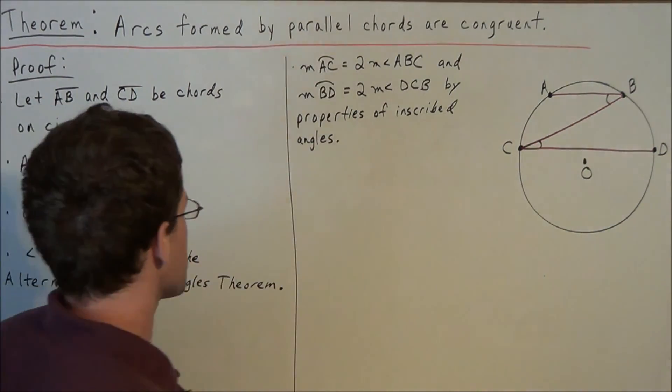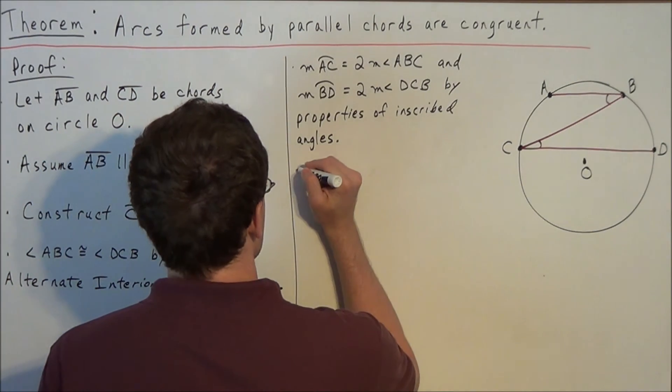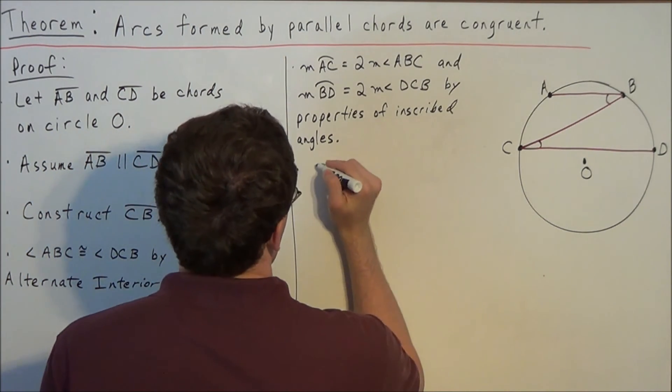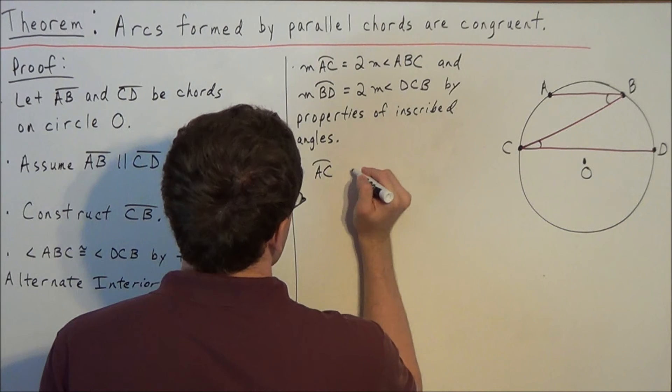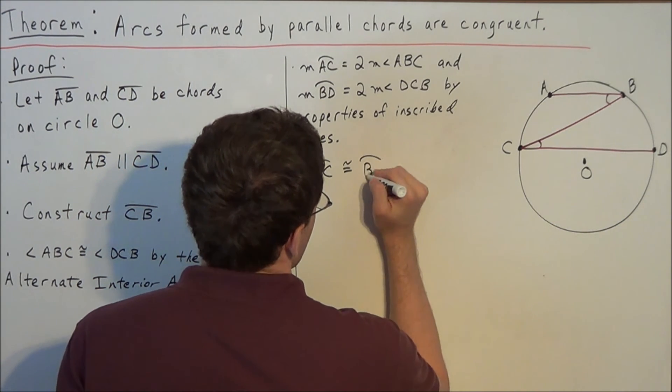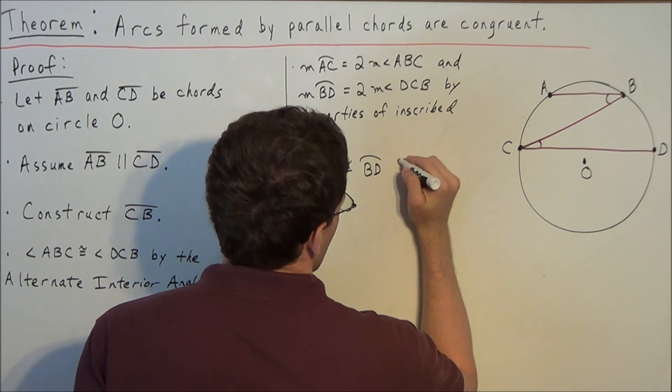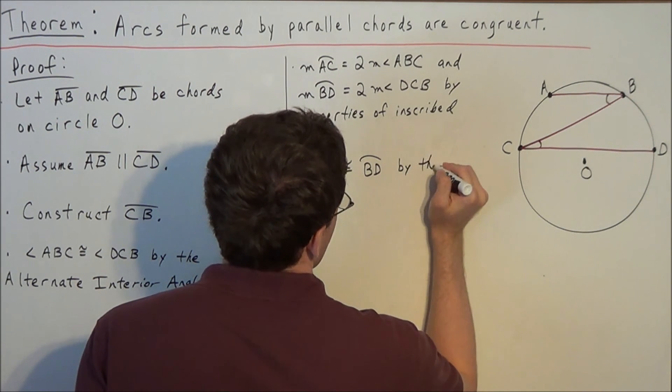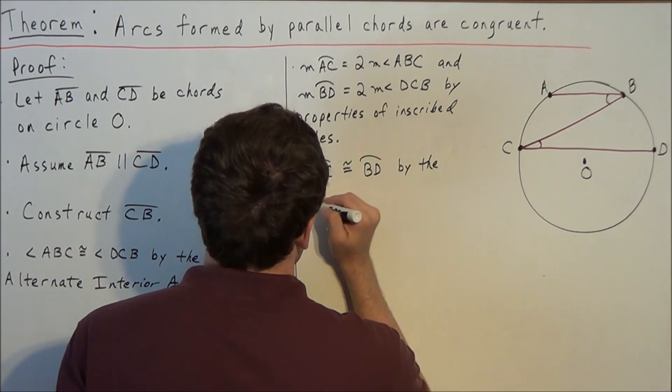So now, at this stage of the proof, we could just go ahead and say that arc AC is congruent to arc BD. And this is true by the multiplication postulate.